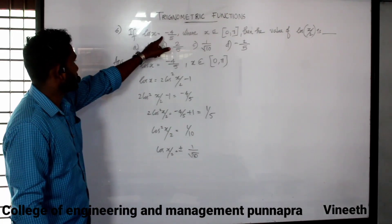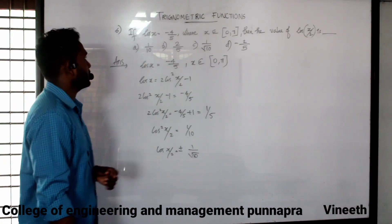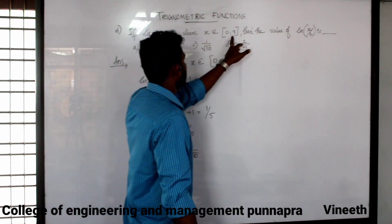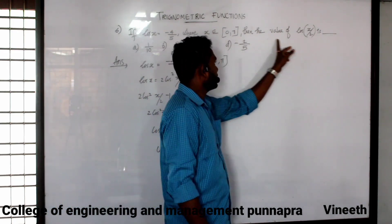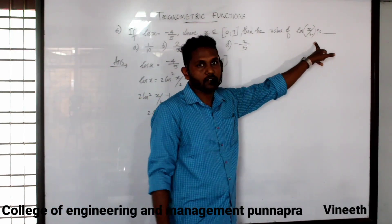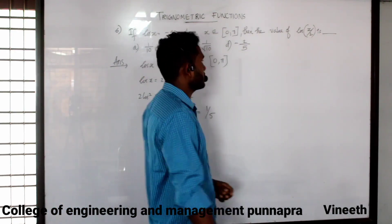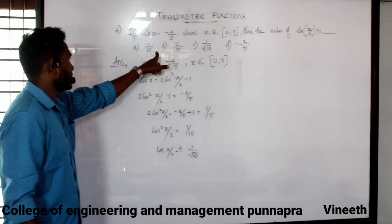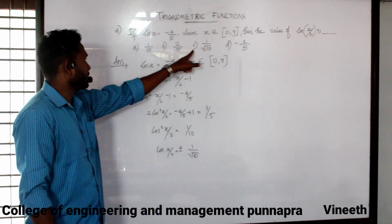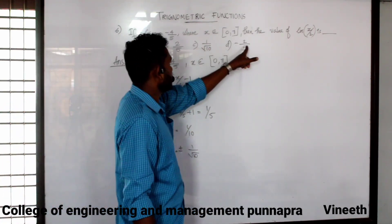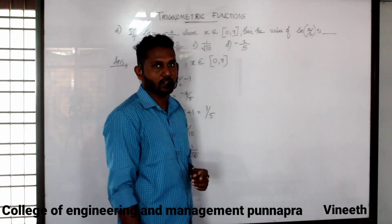Next question: if cos x is equal to minus 4 by 5, where x is an element of (0, π), then the value of cos(x/2) equals what? The options are 1 by 10, 2 by 5, 1 by root 10, and minus 2 by 5.